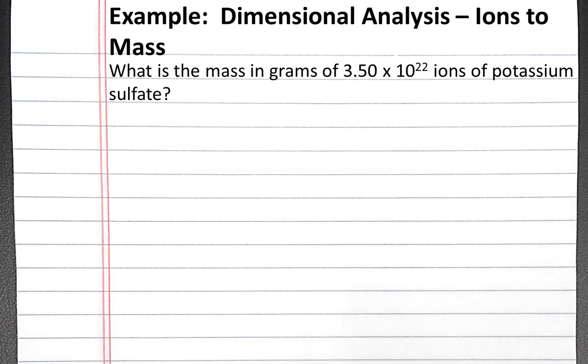We can start the dimensional analysis using the information we're given in the problem, 3.50 times 10 to the 22nd ions.